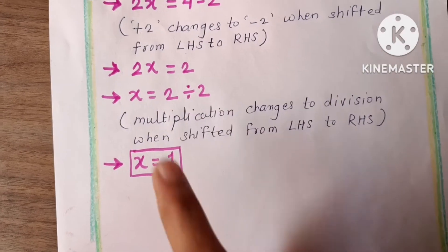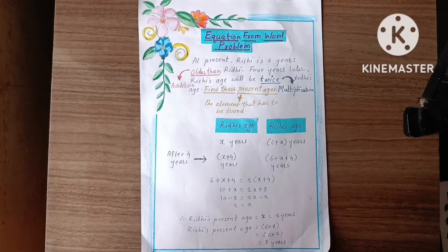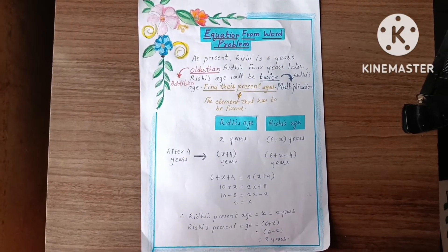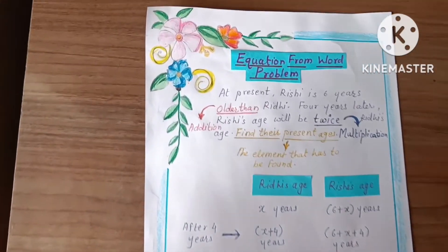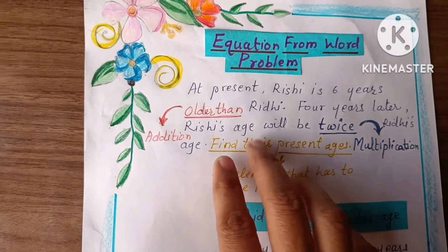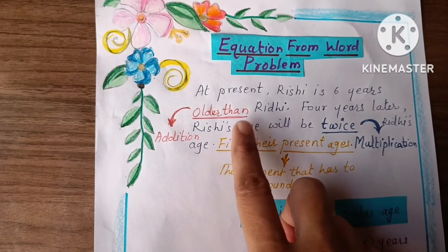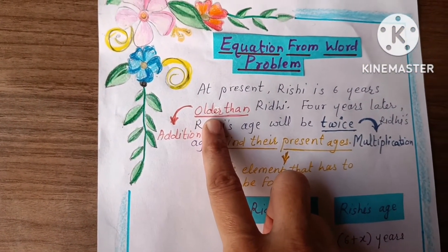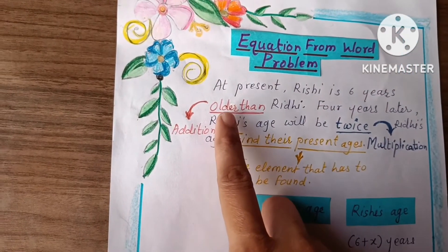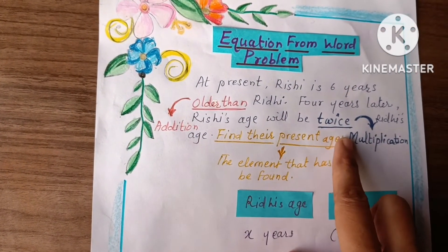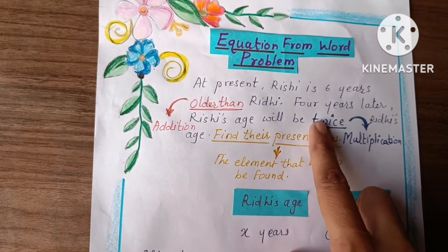The next page is equation from word problem. In word problems, if words like 'older than' or 'twice' come up — 'older than' means addition, and 'twice', 'thrice', 'three times', 'four times', 'five times' means multiplication.